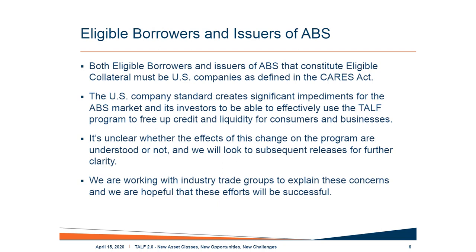The eligible borrower and issuer of ABS to constitute eligible collateral must be U.S. businesses under the CARES Act definition. In 2009, the primary dealer was deputized by the Fed to implement the diligence procedures to determine whether borrowers met that standard. The question now is whether, without more guidance, a primary dealer implementing that rule can sort of look through. We really need guidance to understand what the process will look like so that managers, borrowers, dealers, and issuers know what they need to do.